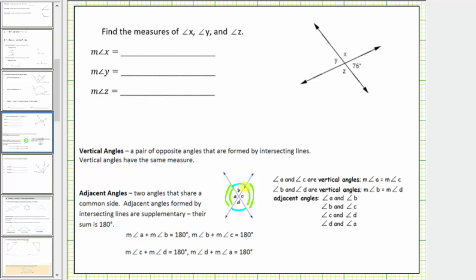Going back to the question, notice angle X and angle Z are vertical angles, as well as angle Y and the given angle that measures 76 degrees. Because vertical angles are equal in measure, the measure of angle Y must be 76 degrees.